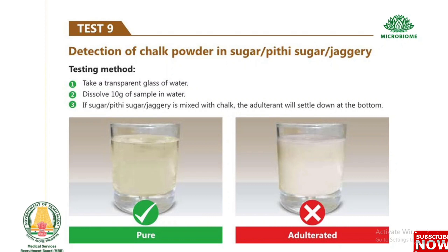Test 9: Detection of chalk powder in sugar, peethi sugar, and jaggery. Take a transparent glass of water and dissolve 10 grams of sample. If sugar, peethi sugar, or jaggery is mixed with chalk, the adulterant will settle down at the bottom.